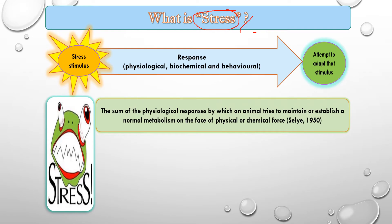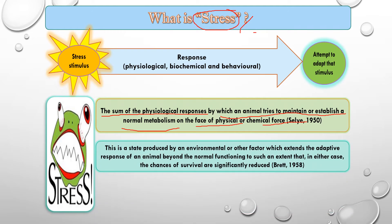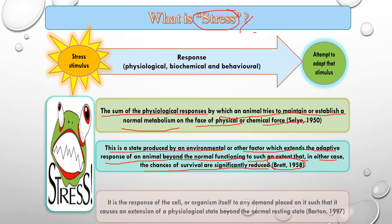According to Selye in 1950, he described stress as the sum of physiological responses by which an animal tries to maintain or establish normal metabolism in the face of physical or chemical force. Later, this was more elaborated by Brett in 1958, who defined stress as a state produced by an environmental or other factor which extends the adaptive response of an animal beyond normal functioning to such an extent that the chances of survival are significantly reduced.